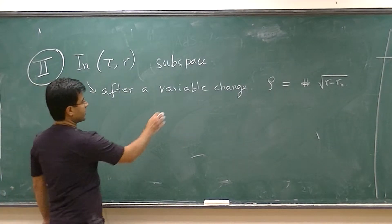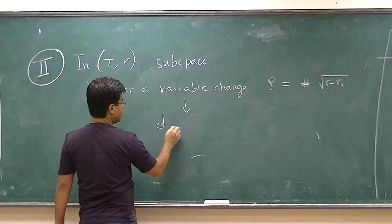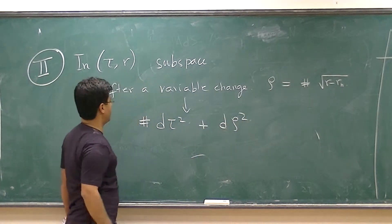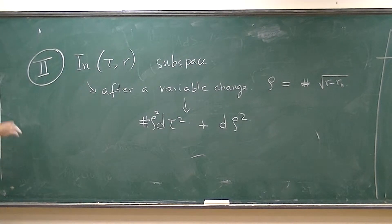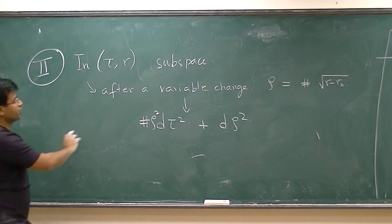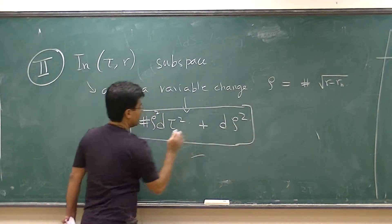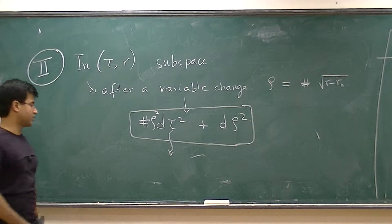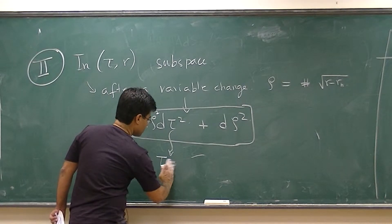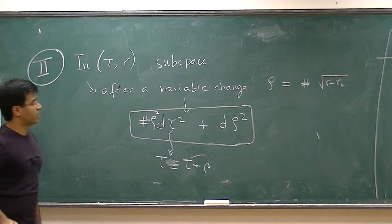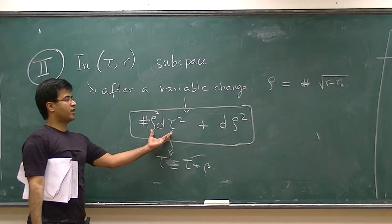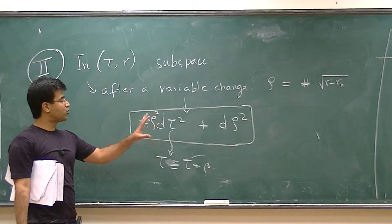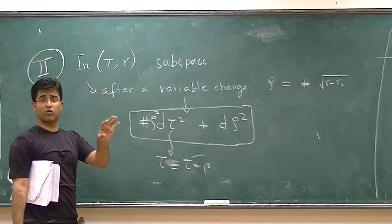If you do that, you can then show that that metric becomes effectively p tau squared times some number plus d rho squared times rho squared. So after doing a variable change, which is very easy to identify, you can recast that metric in this form. This is basically the metric of flat two-dimensional spacetime written in polar coordinates, without any singularities at the origin.